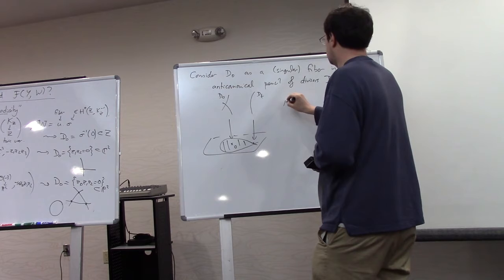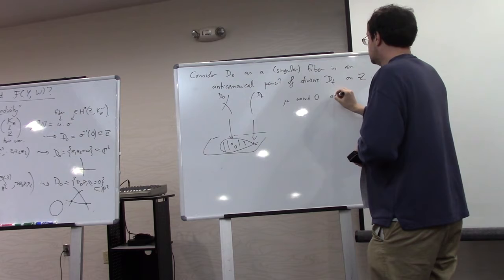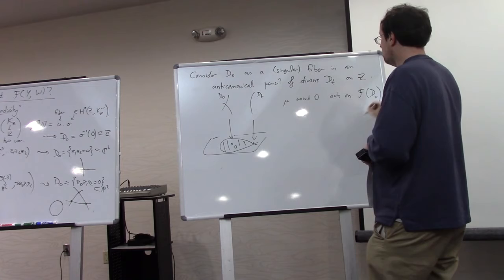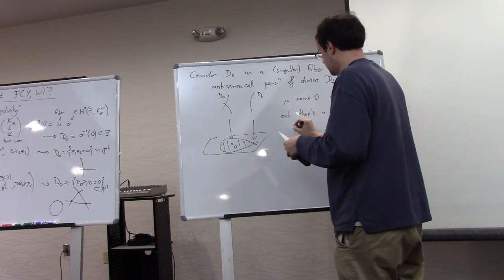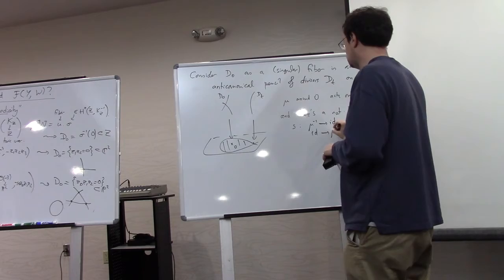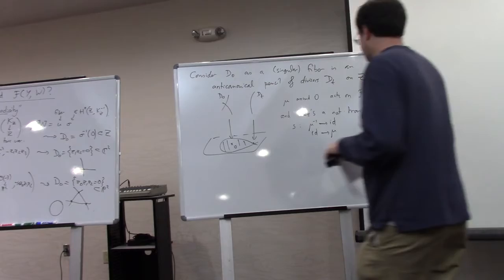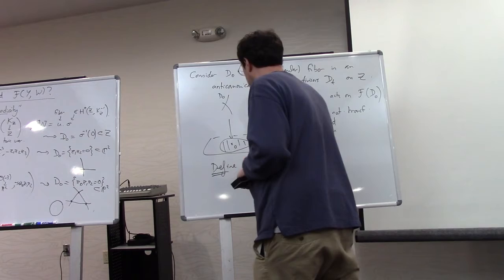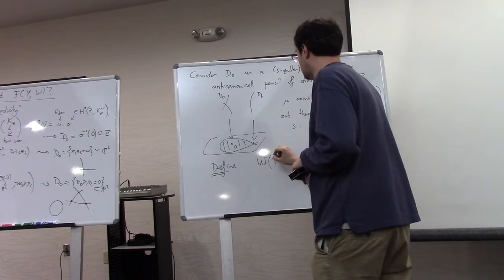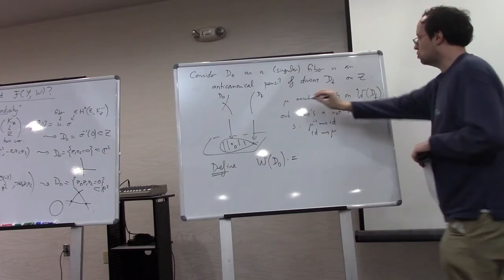so now you have the monodromy around zero again, and you have the section counting natural transformation. Monodromy around zero of this pencil acts on the Fukaya category of D0. And there's, again, a natural transformation. I'll call it S again. From either mu inverse to identity or identity to mu. It depends on how you normalize it, whether this leg or this leg is the input. And so, the claim is now, it makes sense to define the Fukaya category. Maybe I should have said Fukaya-Seidel.